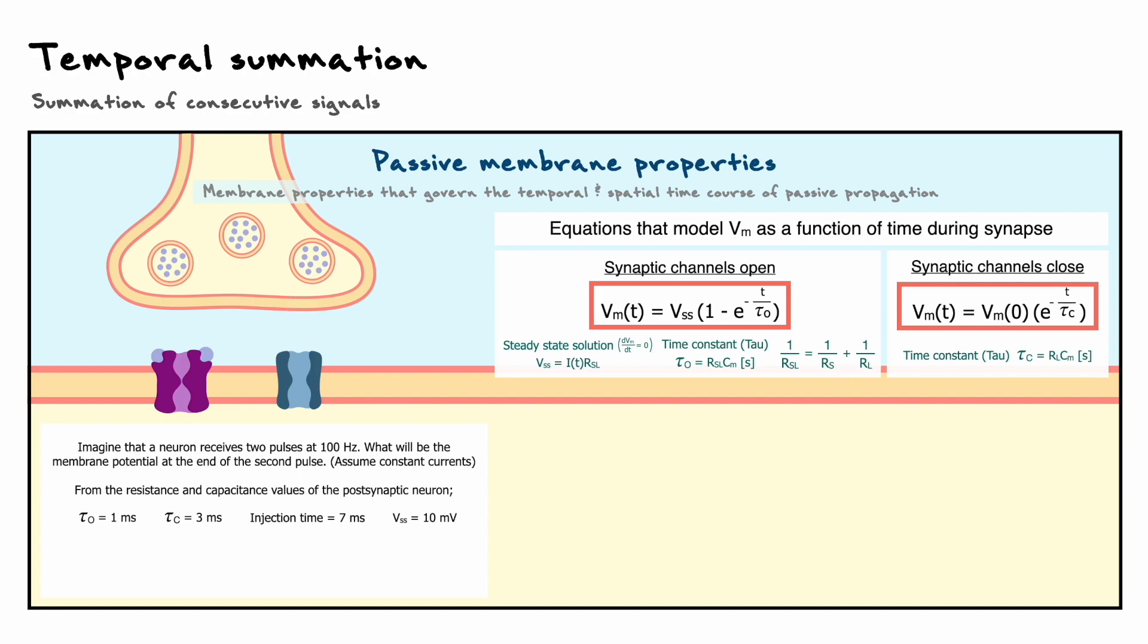Here we make this assumption to keep the steady state potential constant as you will see later. We'll also imagine that based on the values of the resistance and capacitance of our postsynaptic neuron, the time constant during the synaptic activation is 1 ms, and when the channel is closed, the time constant becomes 3 ms. Furthermore, we'll imagine that the current injection from the channels lasts 7 ms and that the steady state potential is about 10 mV.